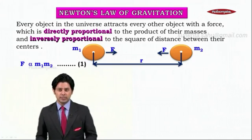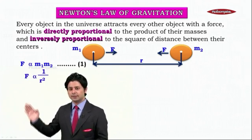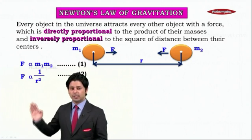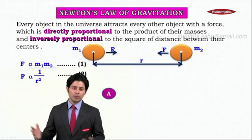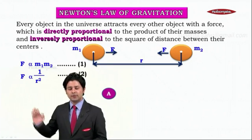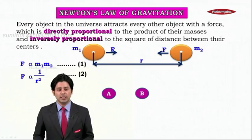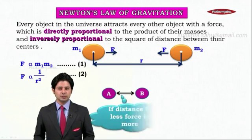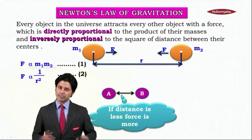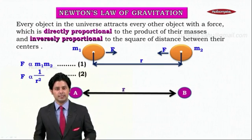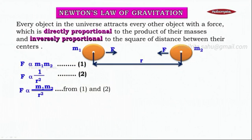The second part of the law states that F is inversely proportional to the square of the distance — this is equation two: F ∝ 1/r². This means if we consider two objects A and B and the distance between them is less, the force of attraction will be more. If we increase the distance between them, the force of attraction will decrease.